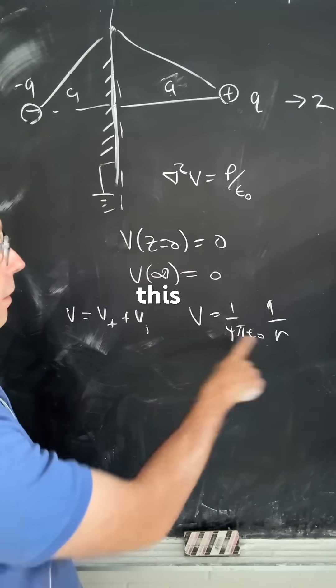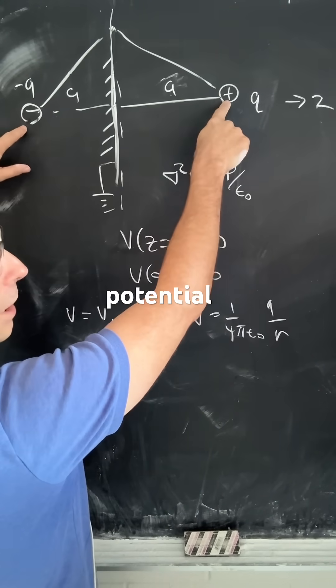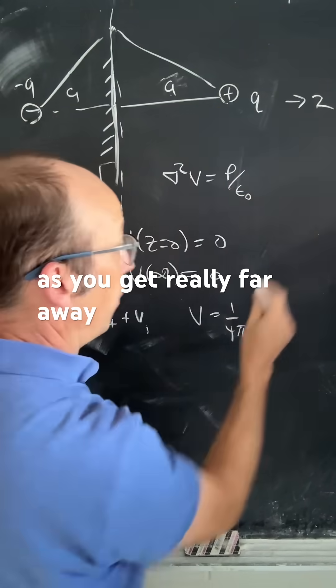Well, as r goes to infinity, this goes to 0. So the potential due to these two charges as you get really far away goes to 0.